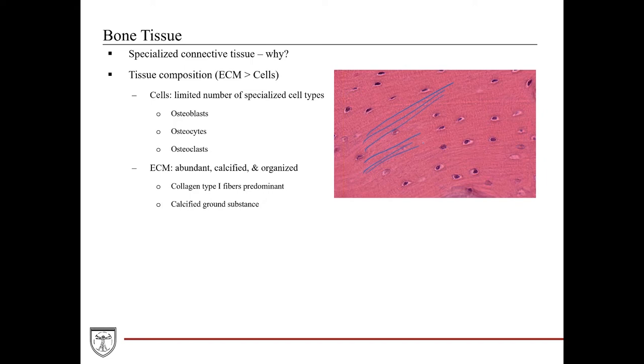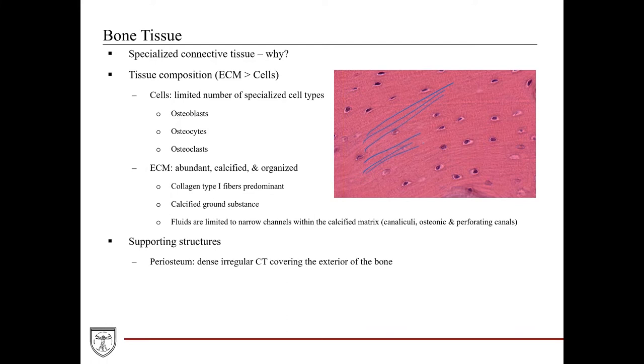The ground substance in the bone tissues is the part that is calcified. And as for the fluids, the fluids are there. However, they're limited to the small and large channels that traverse through the calcified matrix of the bone. And much like the cartilage, the bone tissues also have some supporting structures around it. The periosteum is the dense connective tissue that covers the exterior of the bone, bringing in the rich neurovasculature into the core of the bone tissue. And then in the inside, those spongy bone spicules are all covered by a much more delicate layer of bone cells that cover the interior of the bone.